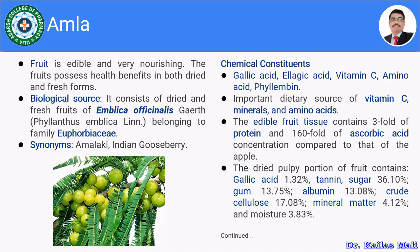Amla is rich in vitamin C, which acts as an antioxidant and reduces oxidative stress in various chronic diseases. Moving towards the chemical constituents of Amla, it mainly comprises vitamin C, amino acids, and phyllamine. It is an important dietary source of vitamin C, certain minerals, and amino acids. It also mainly comprises tannins.